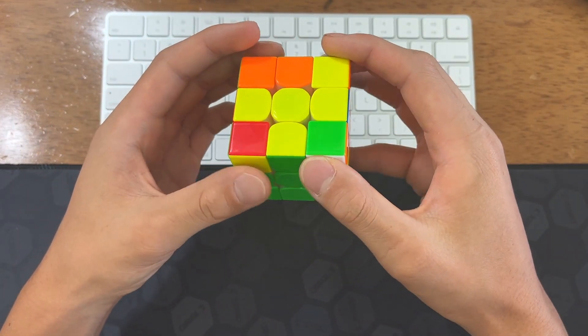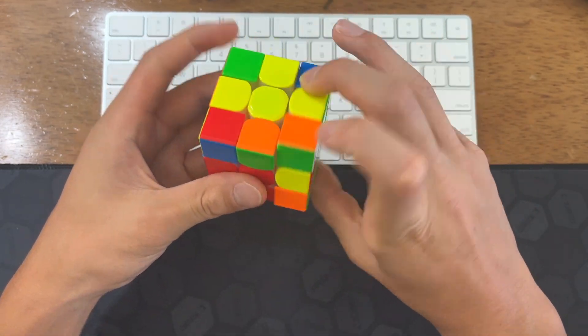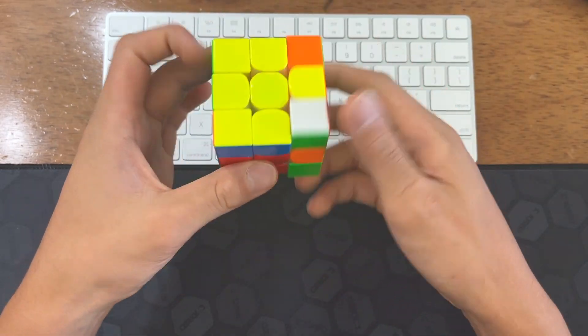And then easy third pair. And then I'm not going to do this because I'll mess up edge orientation, so I'm just going to solve it like that. OLL, OLL.